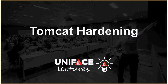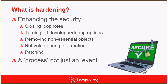Tomcat is actually quite secure out of the box, but there are always things that can be done to improve security. Hardening is ultimately about enhancing security: closing loopholes, turning off developer or debug options, and making sure we don't volunteer too much information. For example, if we have an error page we don't want it to reveal things like the IP address of the machine, the path of files on the file system, or what the underlying application server is.